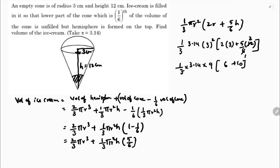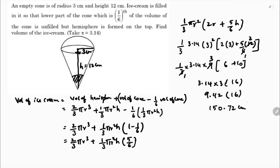So 3.14 × 3 × 16, where 6 plus 10 is 16. Then 3.14 × 3 = 9.42, and 9.42 × 16 = 150.72. Therefore, the volume of ice cream is 150.72 cubic centimeters.